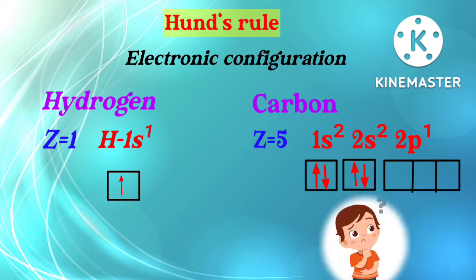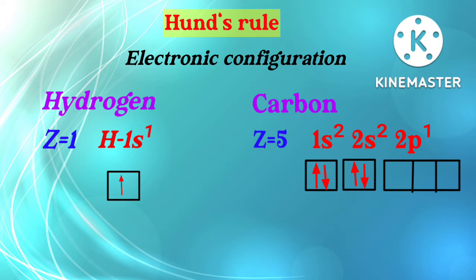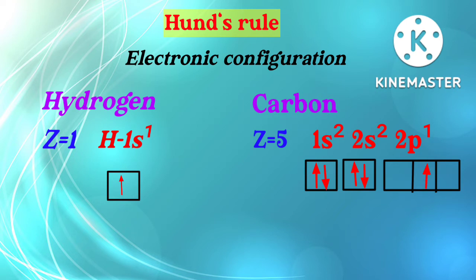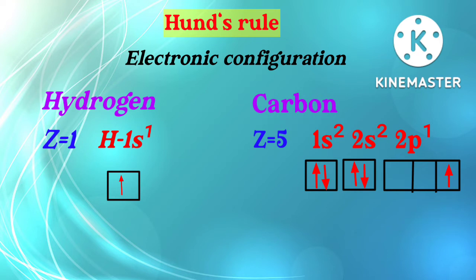Now the question is: if an electron is in 2p, in which subshell will it go? Because we know that 2p has 3 orbitals. If we fill an electron in the first orbital of 2p it is correct, if we fill it in the second orbital it is correct, and even if we fill it in the last orbital of 2p it is correct, because all 3 of the 2p orbitals have the same energy. We will place that electron in the first orbital of 2p in the upward direction.